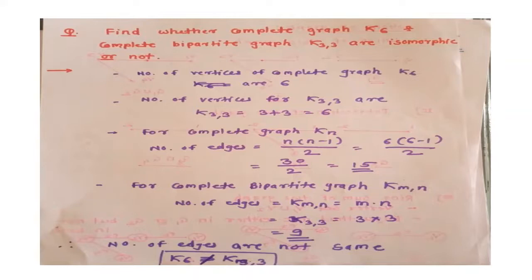So, based on these terms — that is complete graph, bipartite graph, isomorphic graph — there is also a planar graph and Euler's theorem. The first question is: find whether the complete graph K6 and the complete bipartite graph K3,3 are isomorphic.